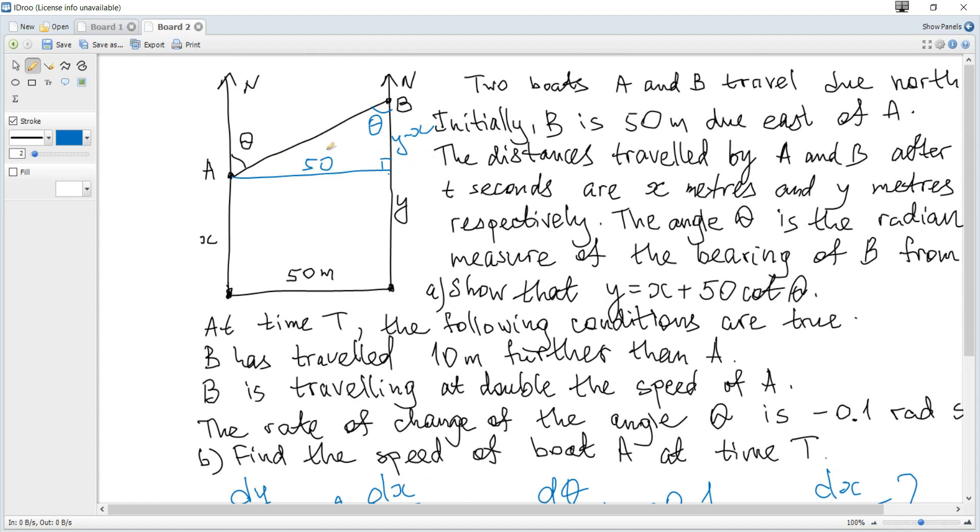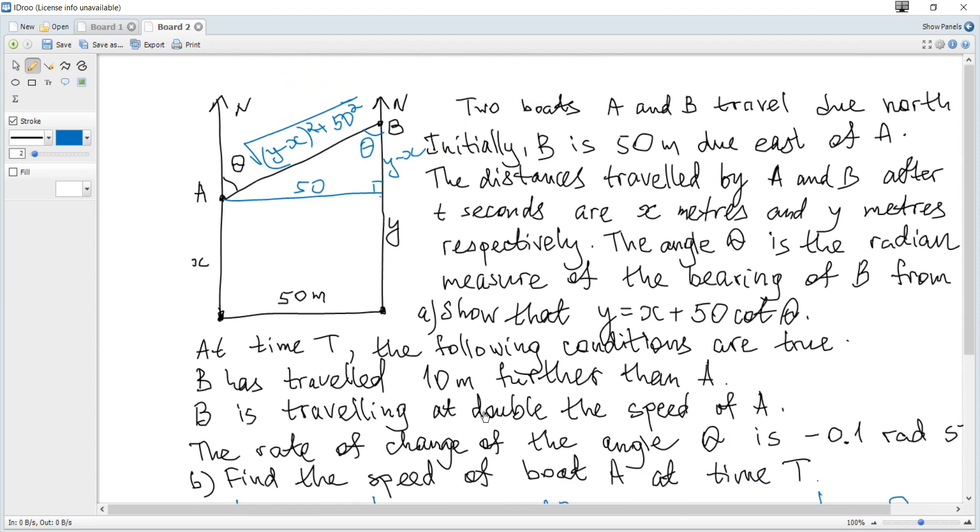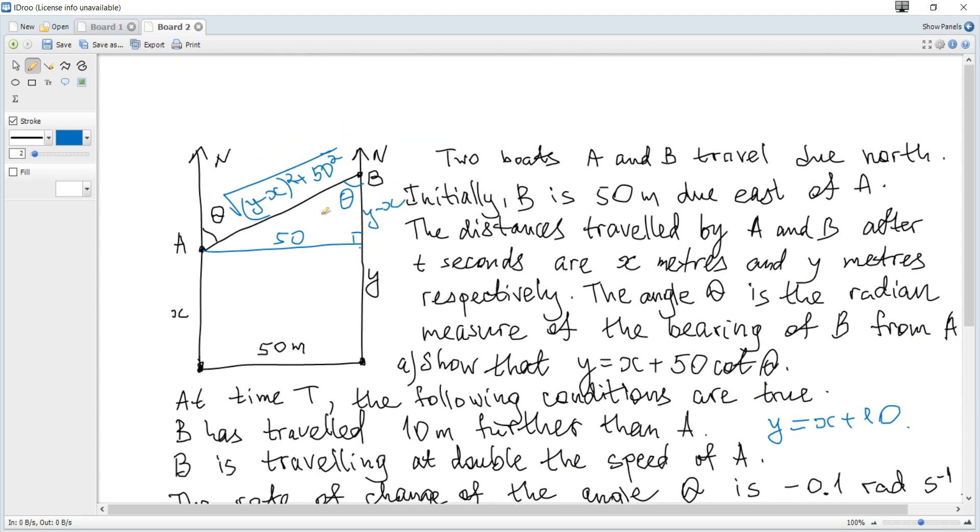And if we consider this, we can see that sine becomes a square root of y minus x squared plus 50 squared. Just the Pythagoras theorem. And it is also given that B has traveled 10 meters further than A at the required moment of time. So y is x plus 10. So y minus x is 10.